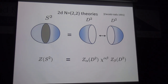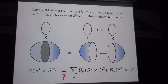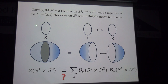We briefly explain the analogy of topological–antitopological fusion. Cecotti and Vafa showed that a two-dimensional (2,2) theory on S², whose partition function can be constructed by sewing two hemisphere partition functions. So the partition function on S² factorizes into two hemisphere partition functions. Naively, the three-dimensional N=2 partition function on the ellipsoid can be regarded as the two-dimensional (2,2) theory on S², which is the base space of the ellipsoid, with infinitely many KK modes associated with the S¹ direction.